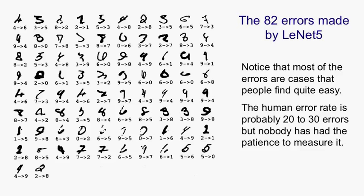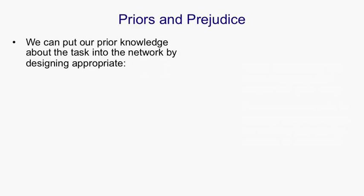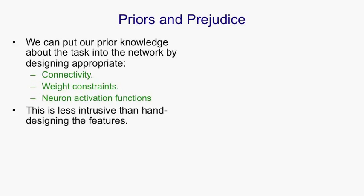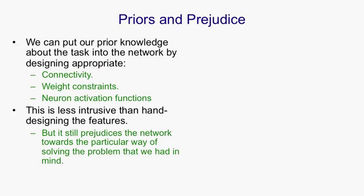I now want to go to a very general point about how to inject prior knowledge in machine learning. And it applies particularly to neural networks. We can put in prior knowledge, as is done in the LeNet-5, by the design of the network. We can have local connectivity. We can have weight constraints. Or we can choose neural activation functions that are particularly appropriate for the task we're doing. This is much less intrusive than trying to hand engineer the features, but it still prejudices the network towards a particular way of solving the problem that we had in mind. We have an idea about how to do object recognition by gradually making bigger and bigger features and by replicating these features across space and we force the network to do it that way.